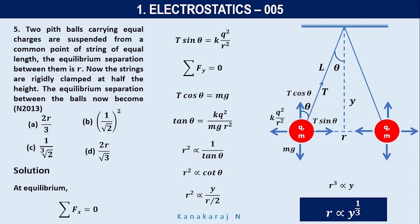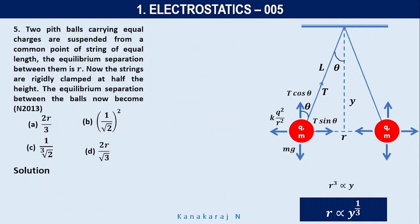Let us go further. For the second case, what has been said in the second case, the string is clamped at half of the height. So let me draw the diagram once again. So the Y becomes Y by 2. The new Y become Y by 2. So I can say that Y prime equal to Y by 2. There is a new separation. We call it as R prime.